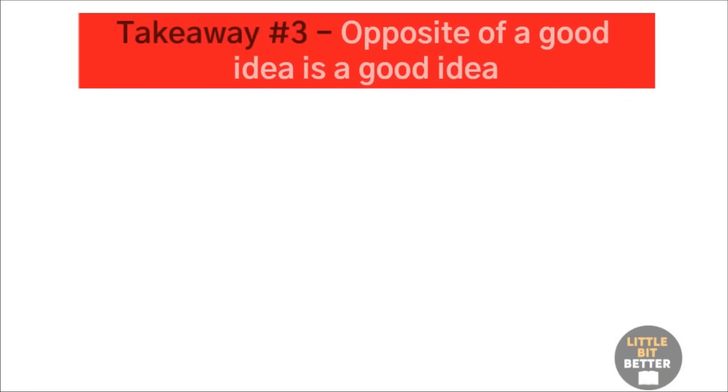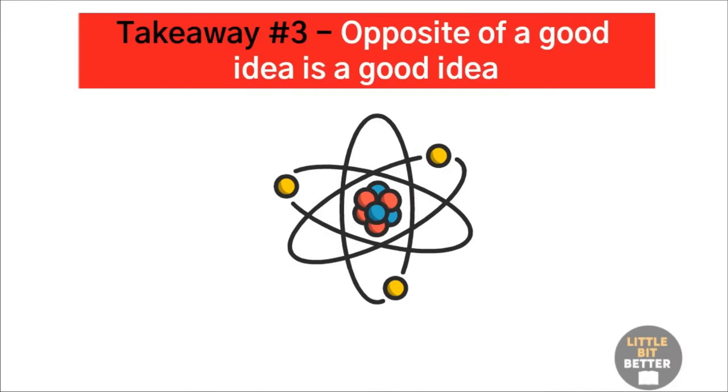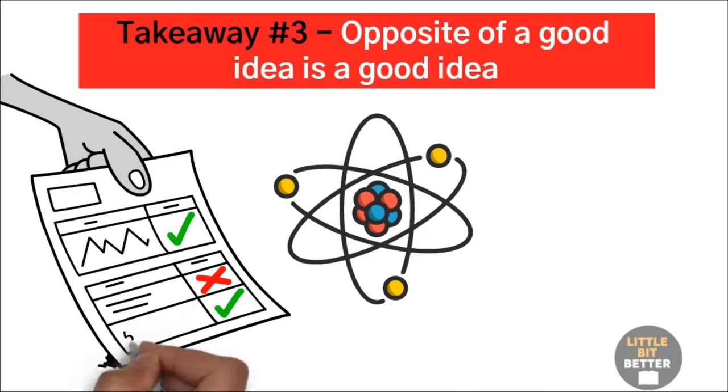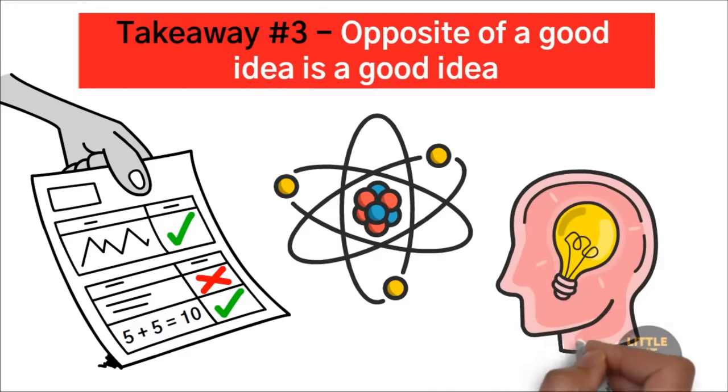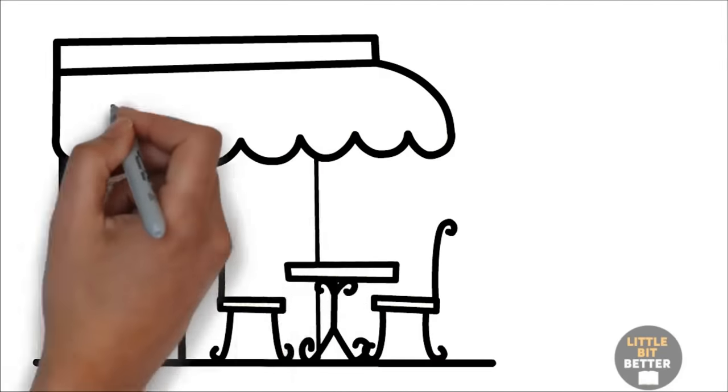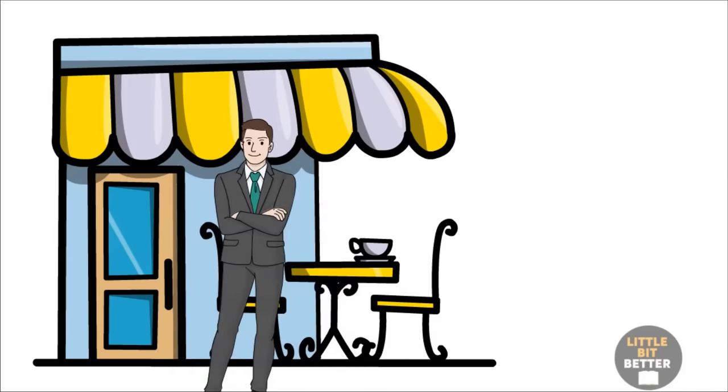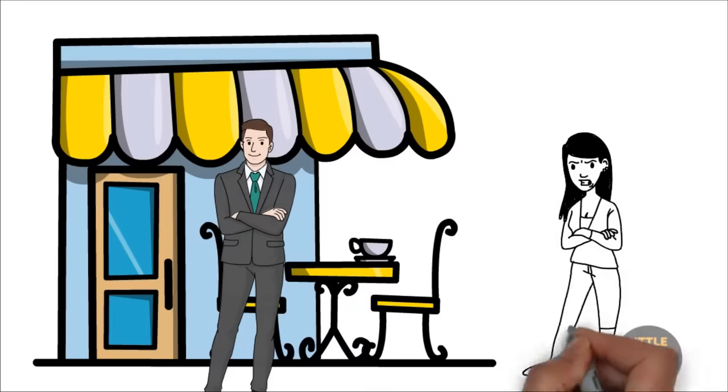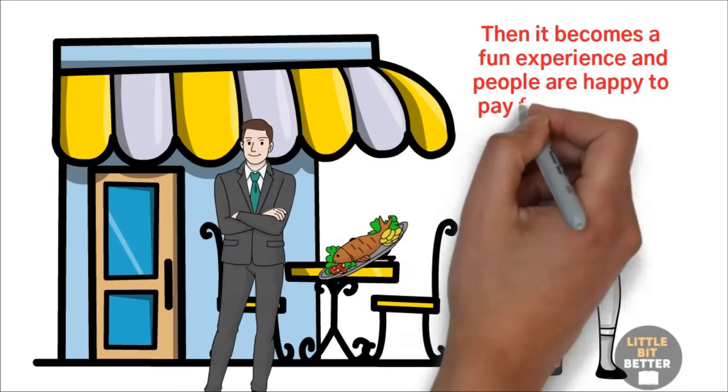Takeaway number three: The opposite of a good idea is a good idea. In science, there are right answers and wrong answers. Opposite of a correct answer is a wrong answer. Five times two equals ten. Any answer that is not ten is wrong. But in psychology and marketing, this rule might not apply. The opposite of a good idea can still be a good idea. For example, if you go to a restaurant, you expect polite and welcoming treatment. The opposite of polite behavior is rude behavior, and there are some restaurants that have made rudeness part of their service. If you visit one of such restaurants, the waitress will bring the food and throw it in front of you and say rude things to your face. Somehow, when you make rudeness part of your culture and people expect to be treated badly, then it becomes a fun experience and people are happy to pay for it.